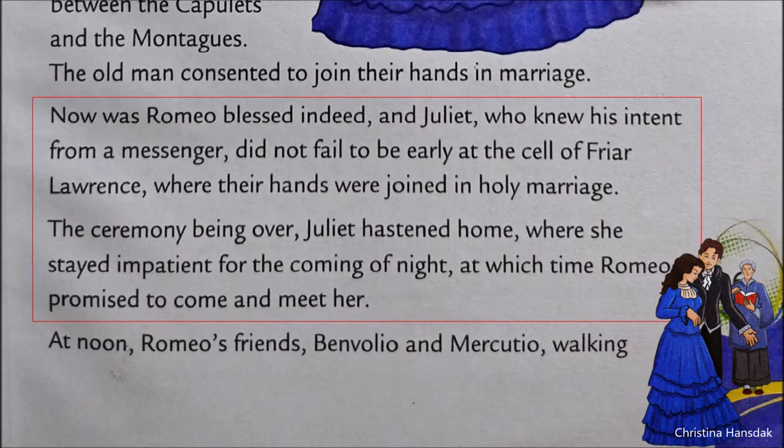But to escape people after the ceremony, Juliet hurried home and waited impatiently for the night to come, so that according to Romeo's promise they could spend the night together. The whole day she had to spend alone at home.